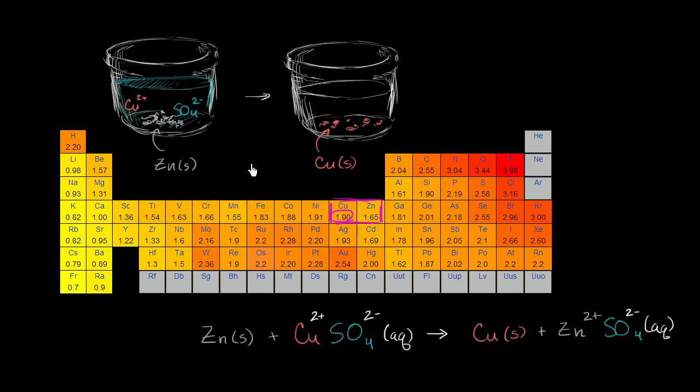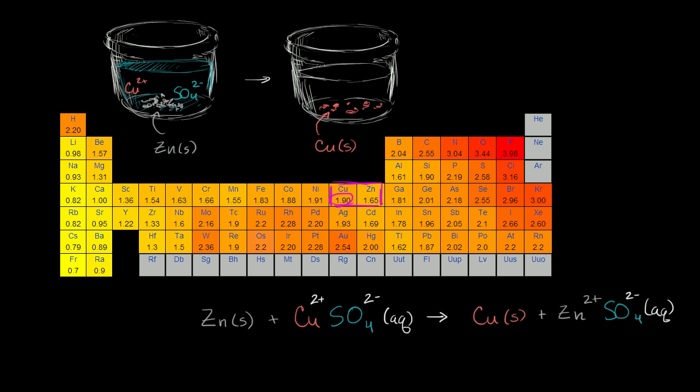Just to make sure that we understand it in terms of oxidation and reduction, let's think about the half reactions here. Let's think about the half reaction for zinc. Zinc here, solid zinc, right over here has a neutral oxidation state. It has no charge. And then we end up right over here with zinc that has a positive charge, a positive 2 charge. So what happened? It lost electrons. It got oxidized. So it lost 2 electrons. The zinc got oxidized.